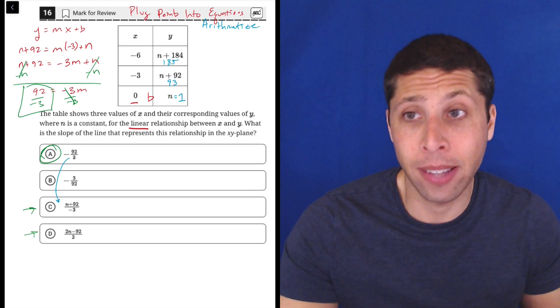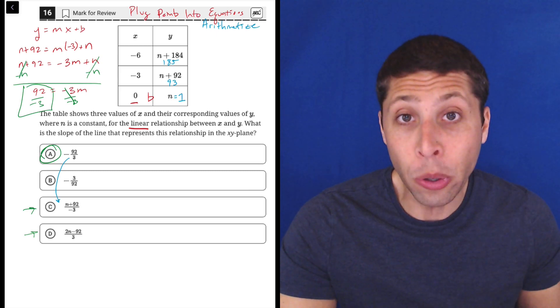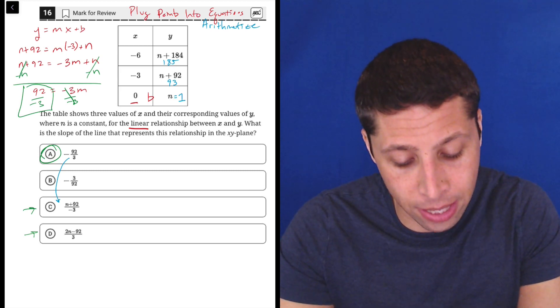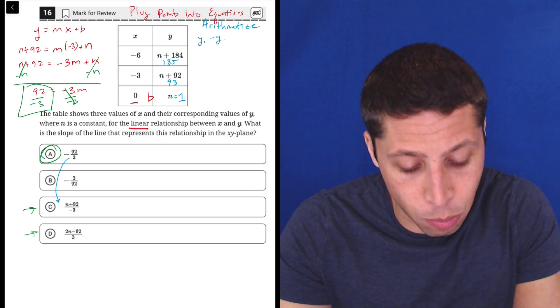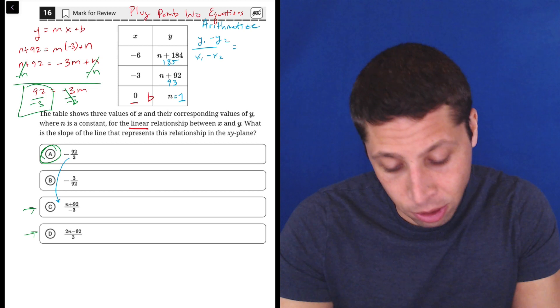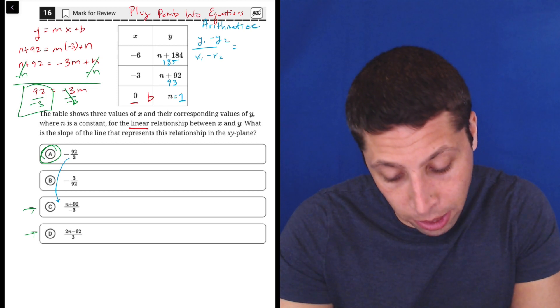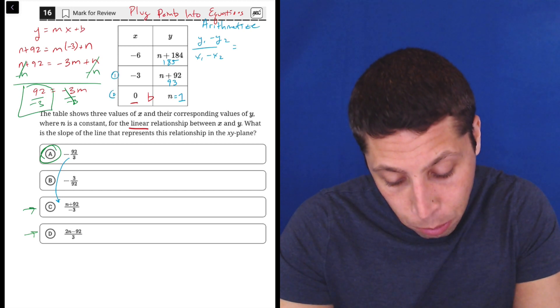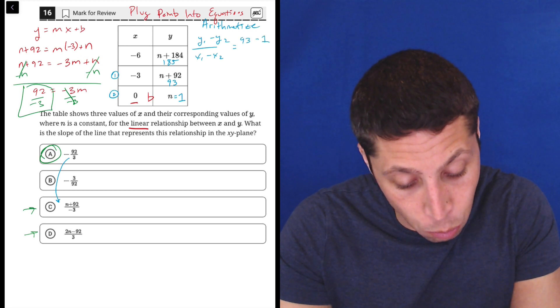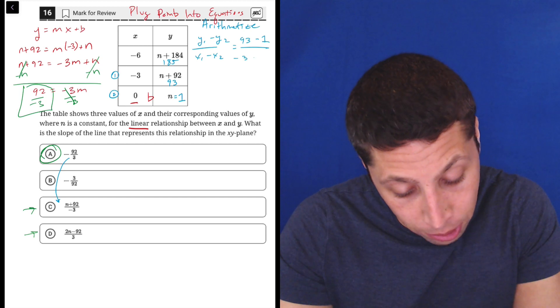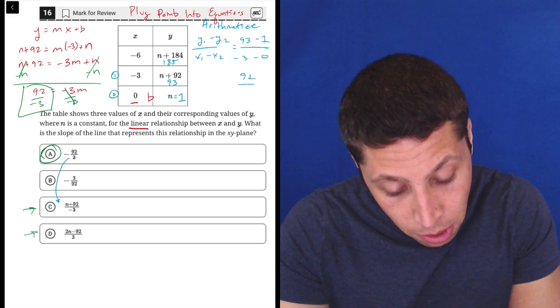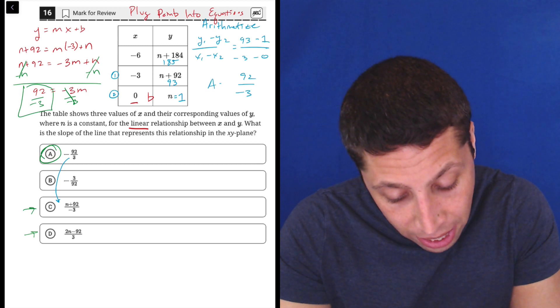So we can just use the regular slope formula. Y1 minus Y2 over X1 minus X2. Let's just do some normal points. Let's make this point 1 here and this point 2. So 93 is my first Y minus 1 over negative 3 minus 0. So that is just 92 over negative 3, which is choice A.